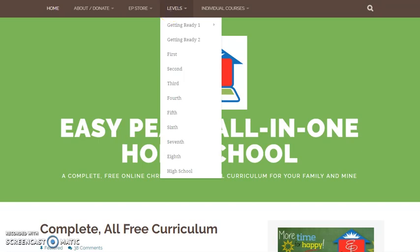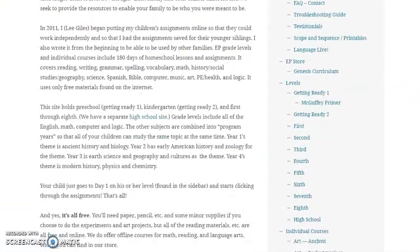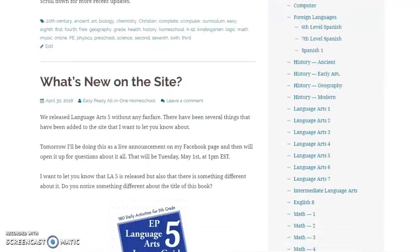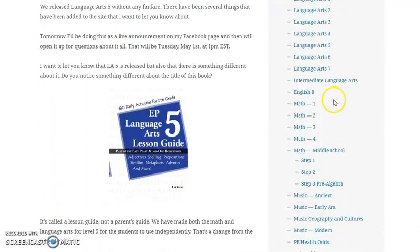We have a menu at the top of the page, and then we have a sidebar menu as well. You can get to our math either by choosing a level. We call them levels instead of grades, but this is basically our first grade, our second grade, our third grade, etc. Or you can, in alphabetical order, get down to math and choose one of our math levels. You can see here, after math 4, it separates and does something different. We'll talk about that in just a minute.